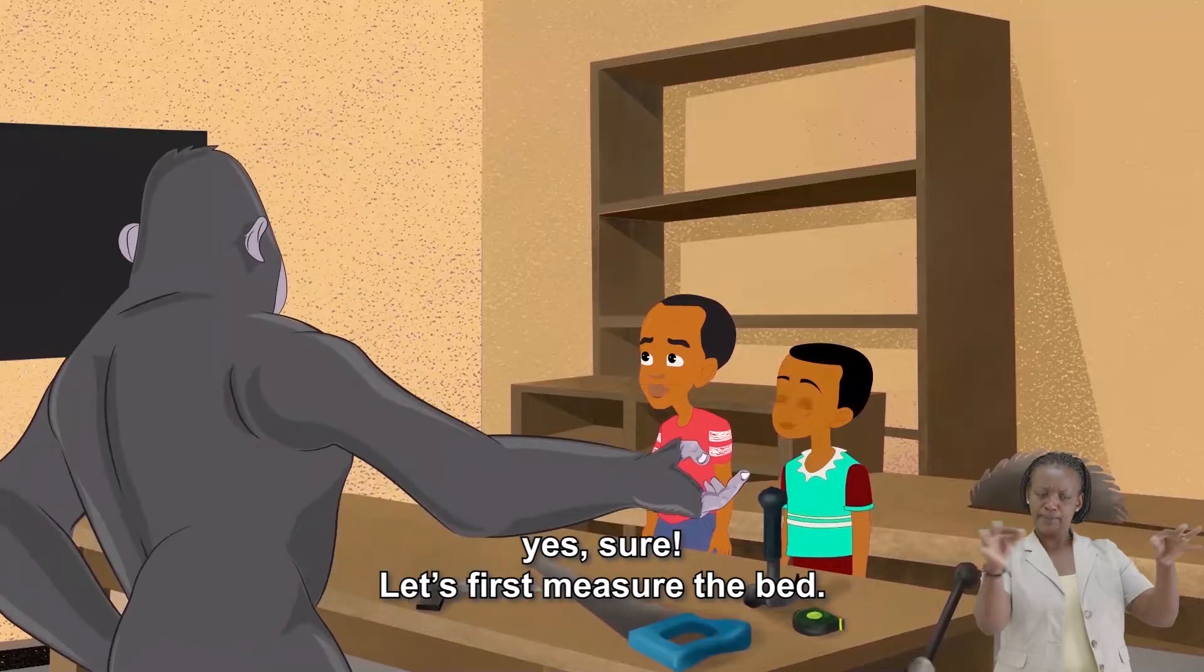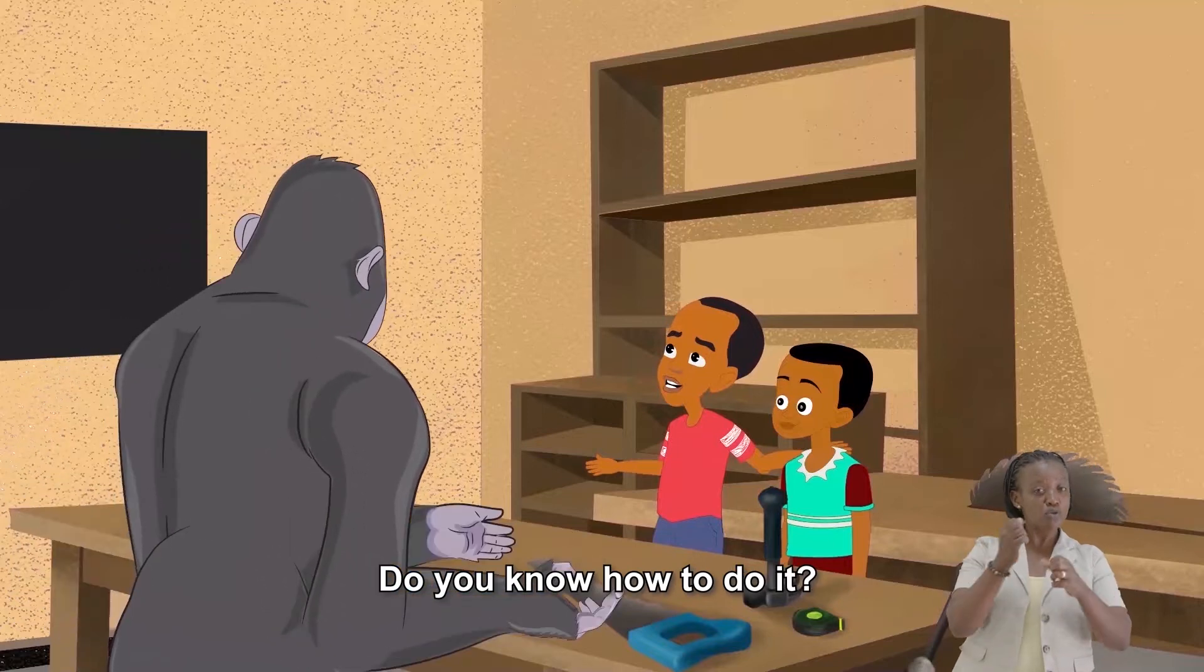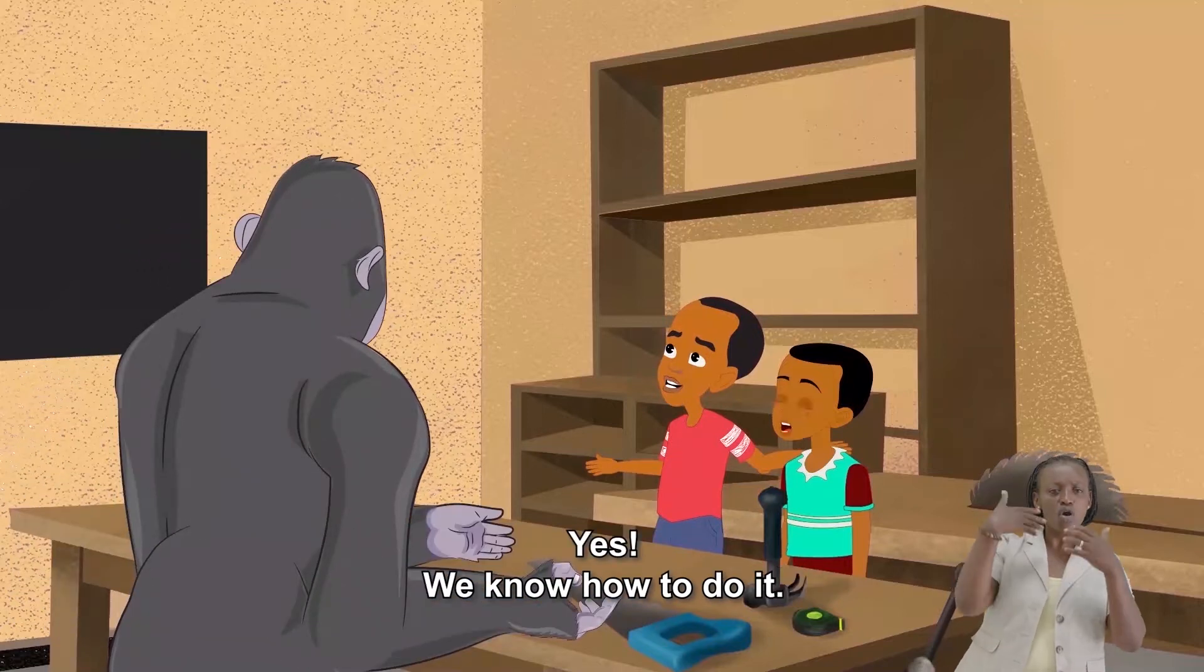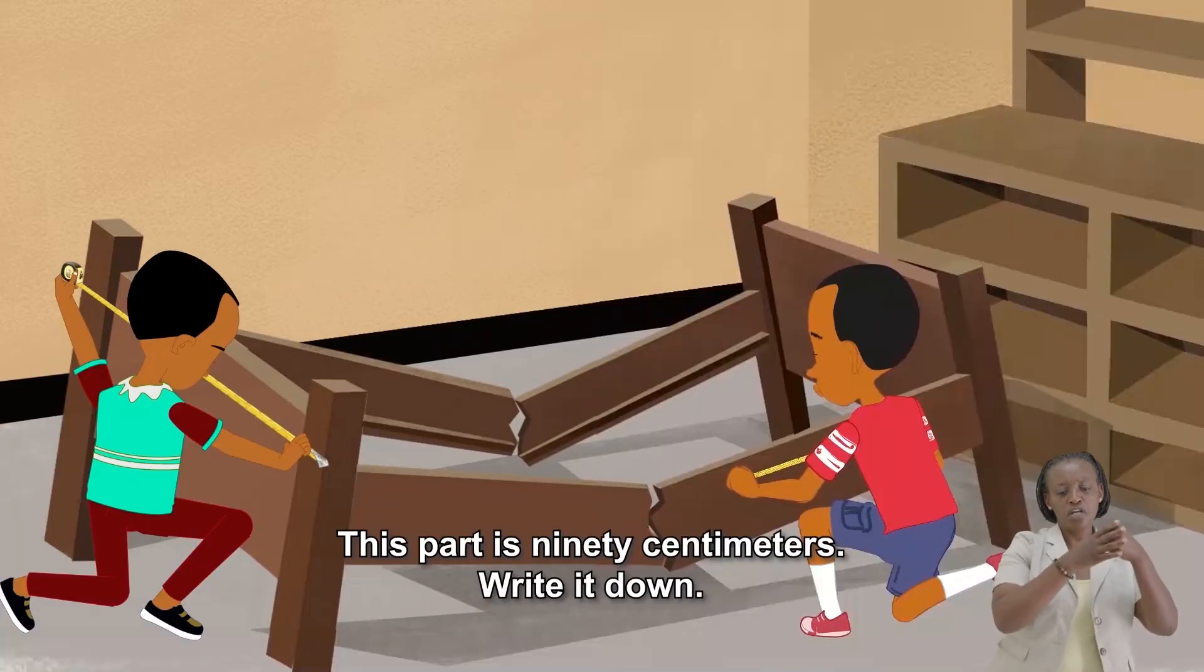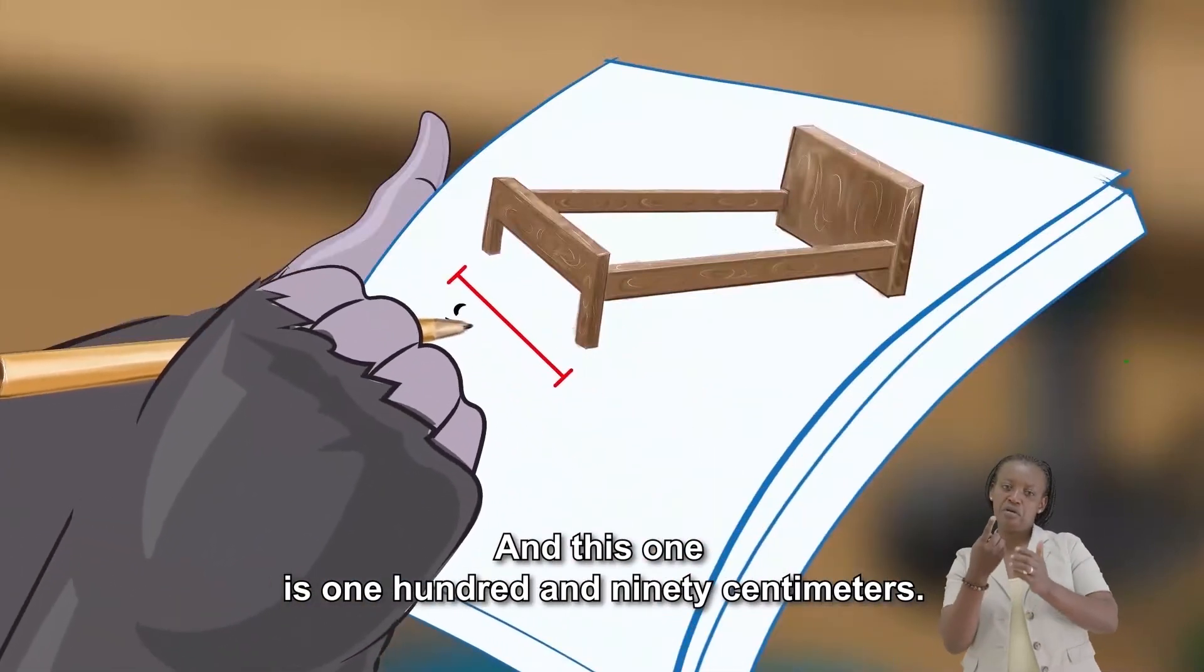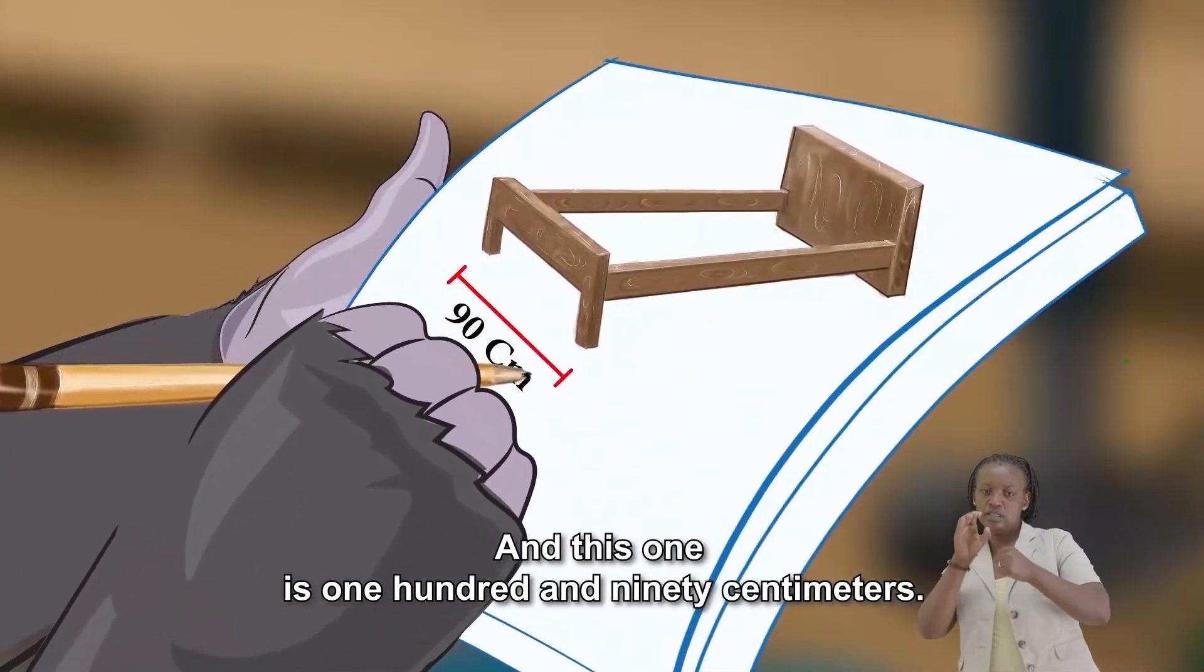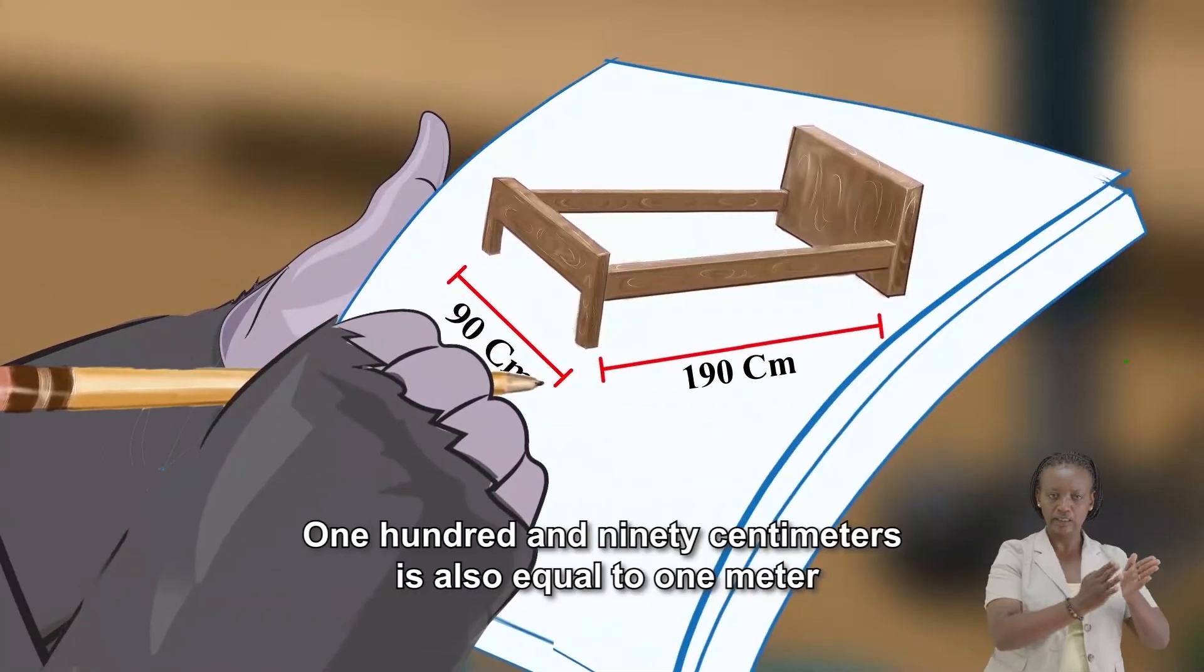Let's first measure the bed. Wase and I can do that. Do you know how to do it? Yes, we know how to do it. This part is 90 centimeters. Write it down. And this one is 190 centimeters. We only measured two sides.